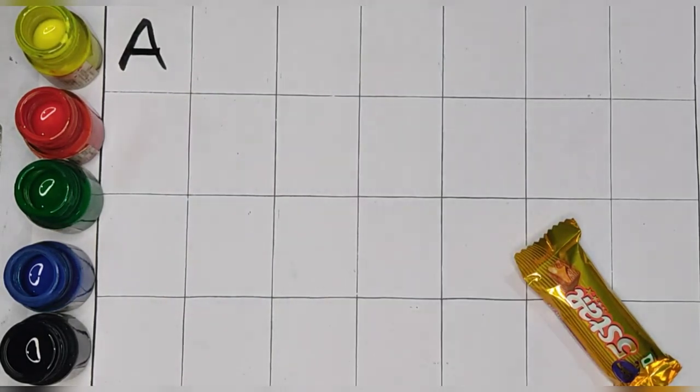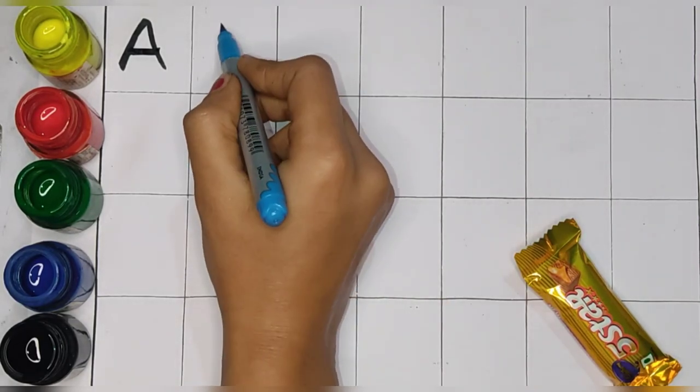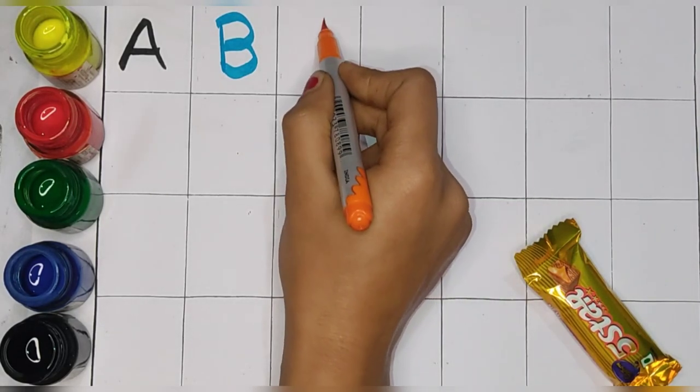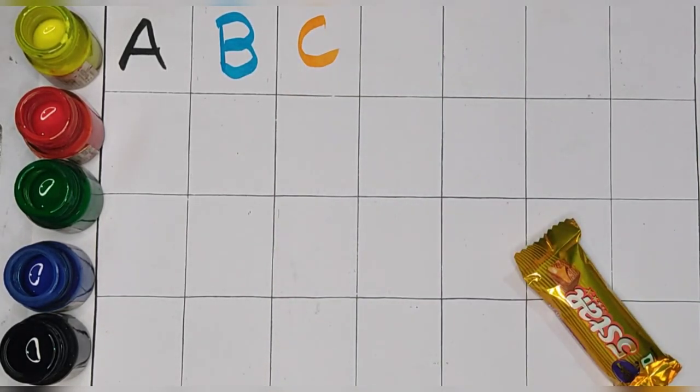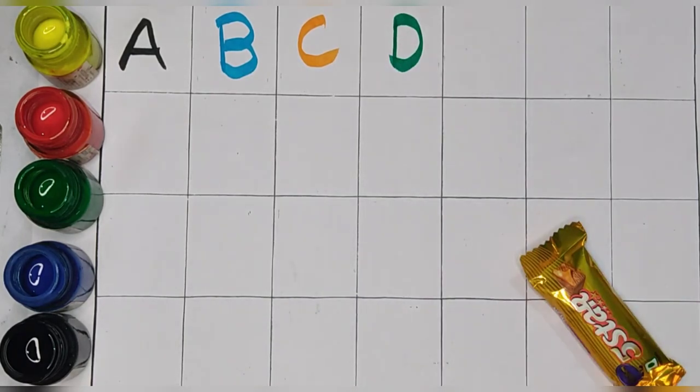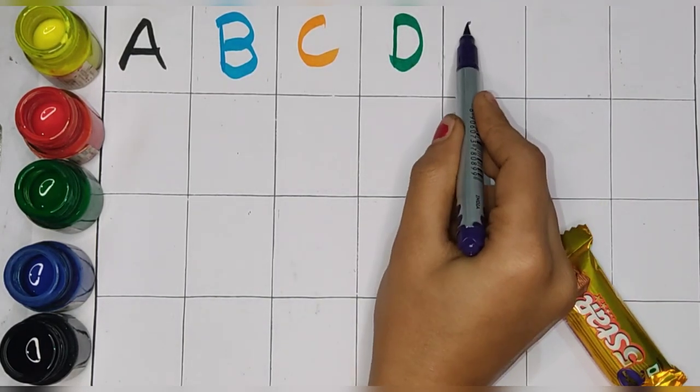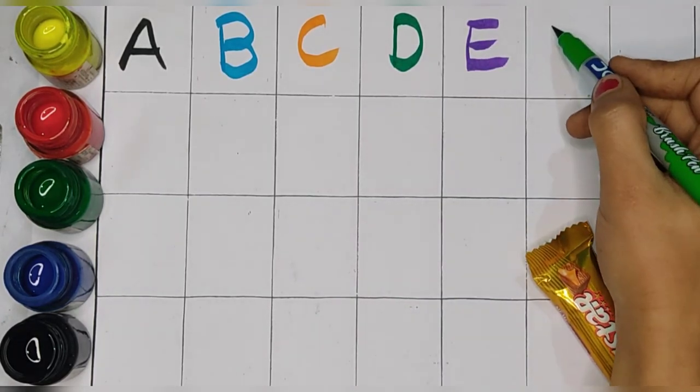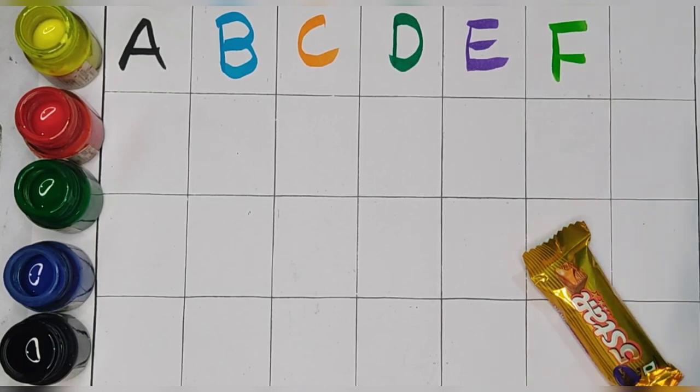A. A for apple. B. B for ball. C. C for cat. D. D for dog. E. E for elephant. F. F for fish.